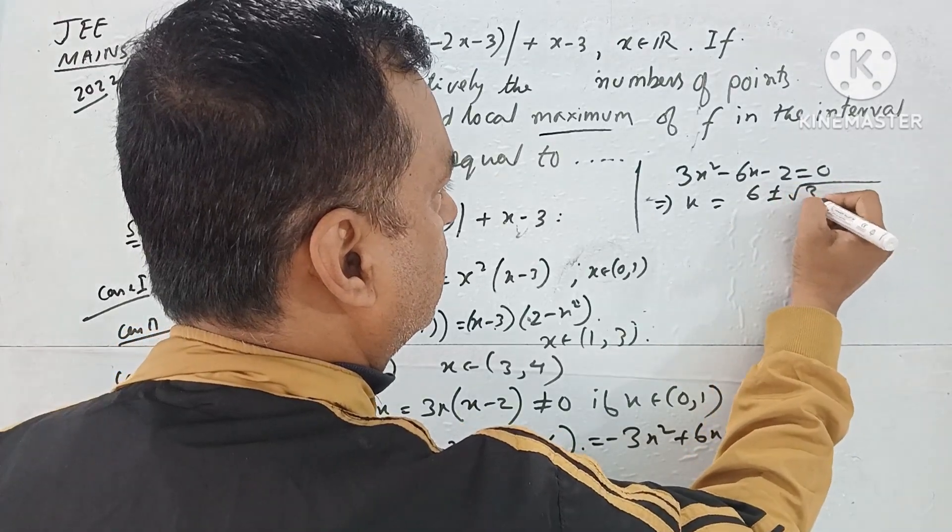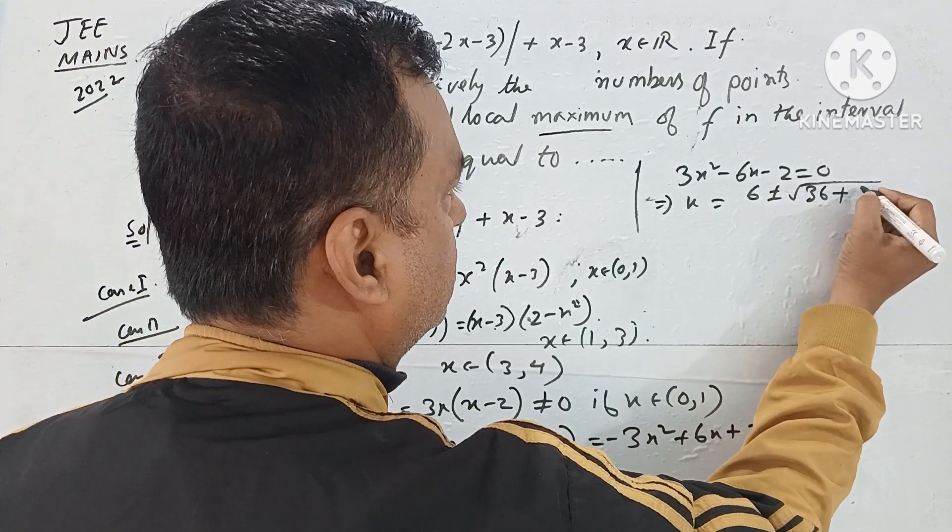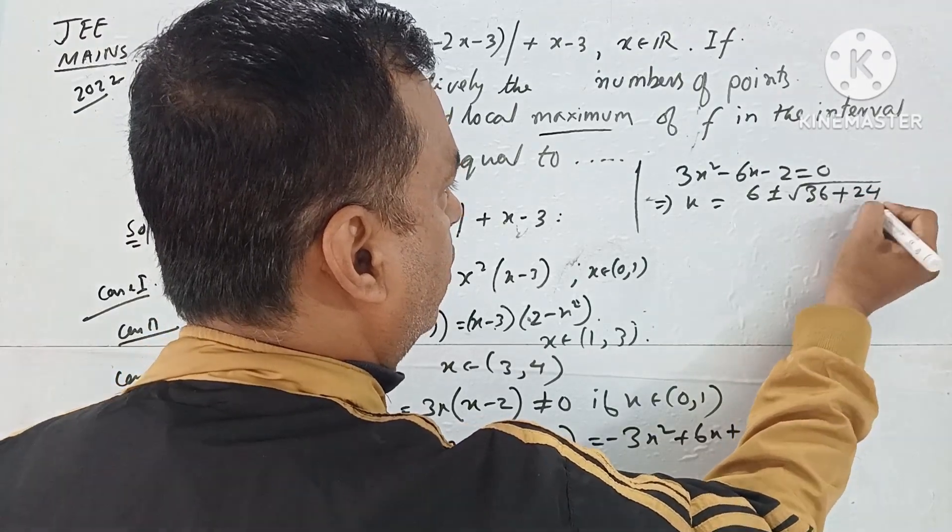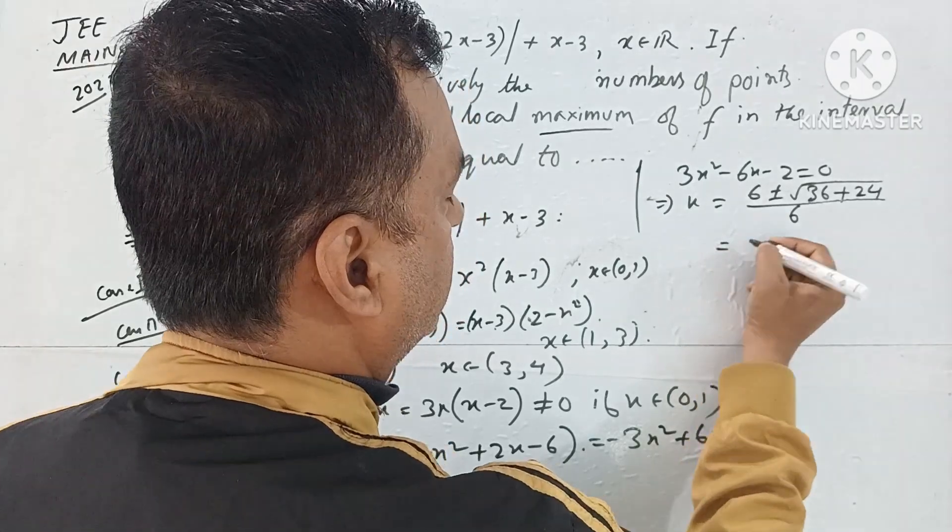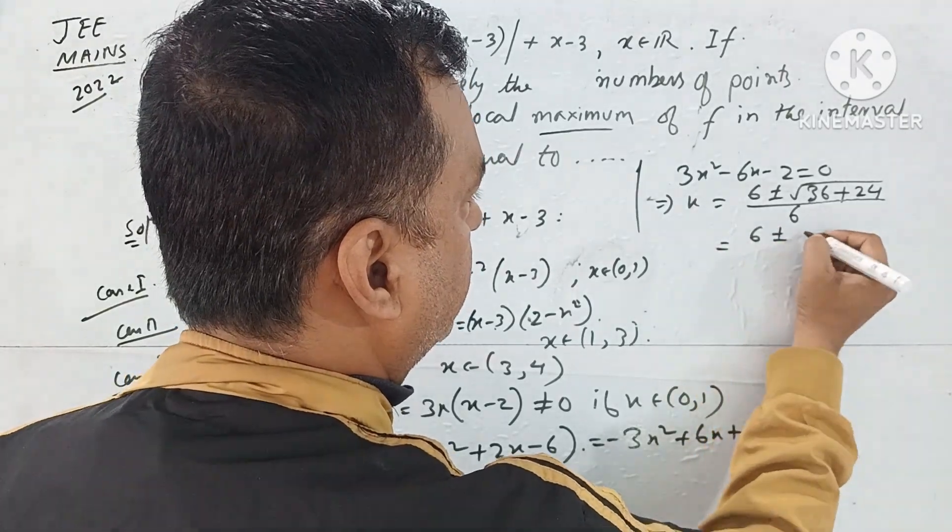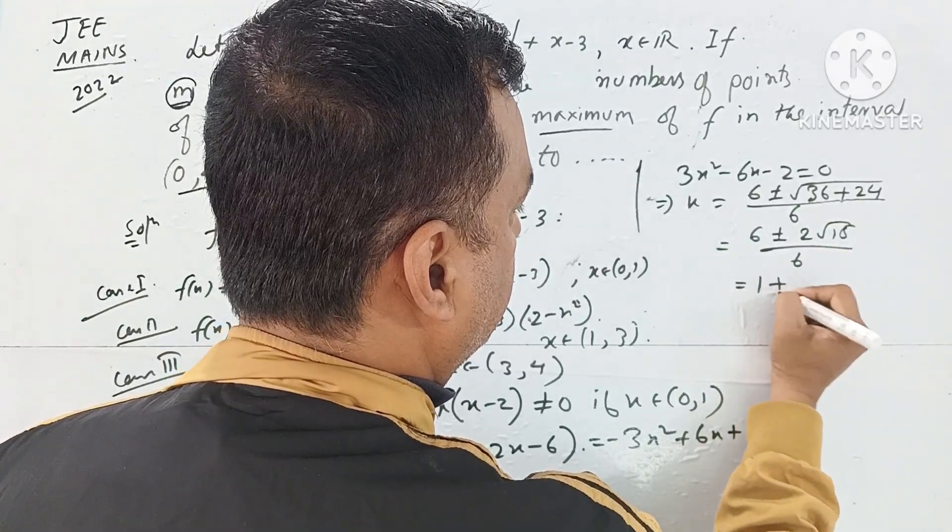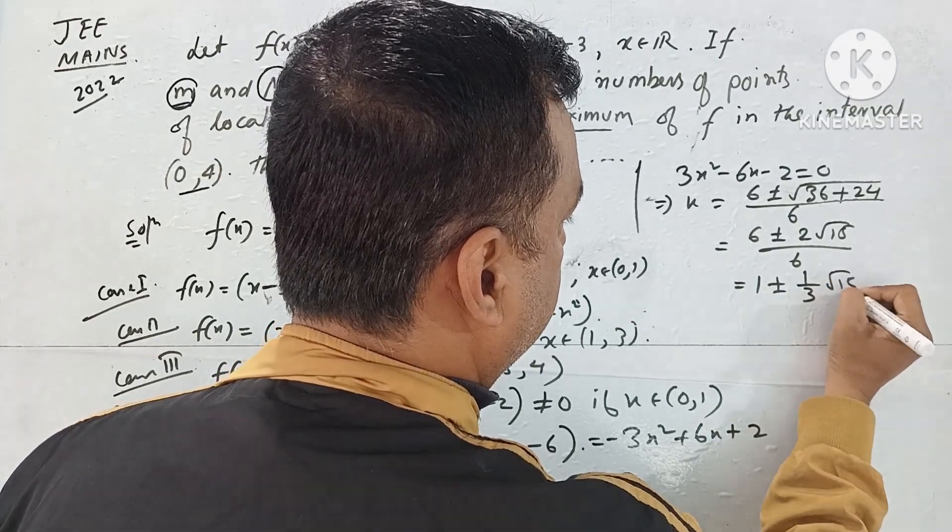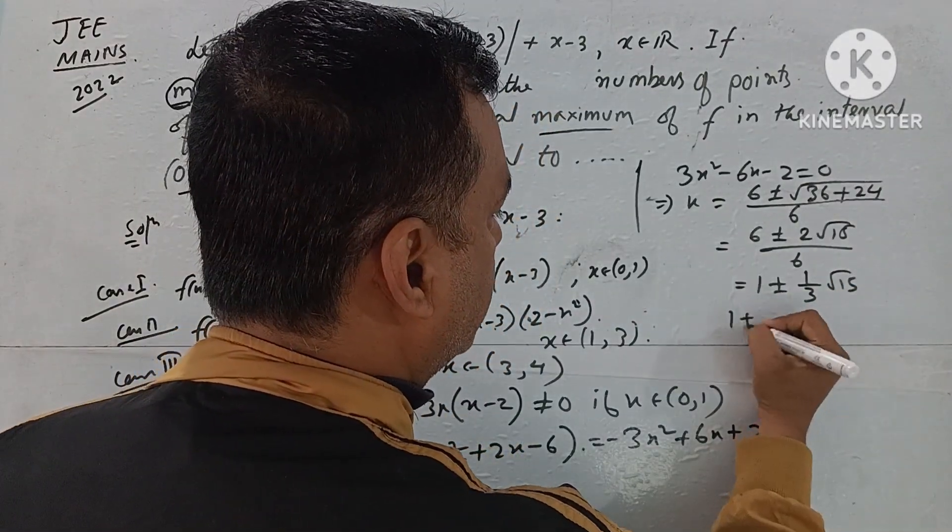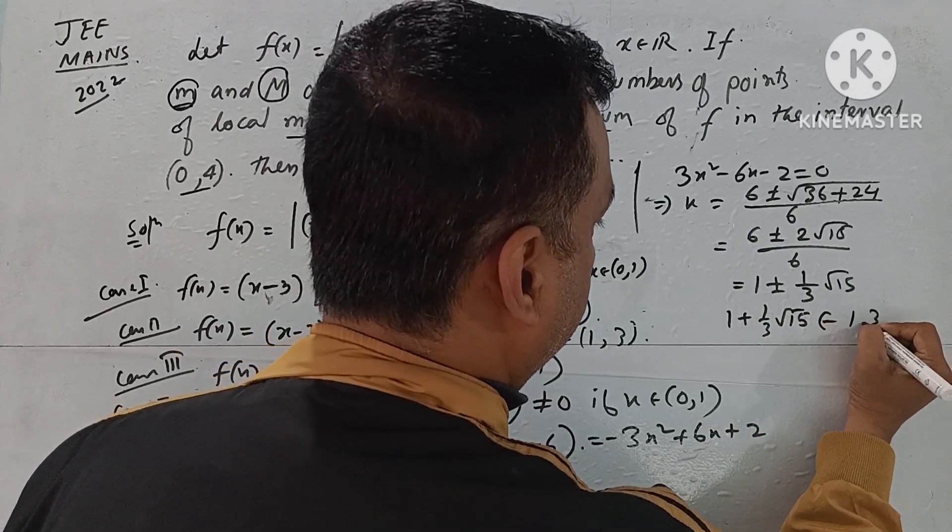Solving this: 3x² - 6x - 2 = 0, so x equals (6 ± √(36 + 24))/6, which is (6 ± 2√15)/6, that is 1 ± (1/3)√15. So here 1 + (1/3)√15 belongs to (1,3).